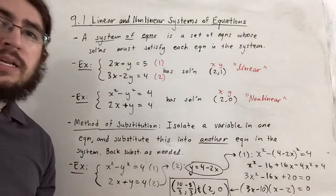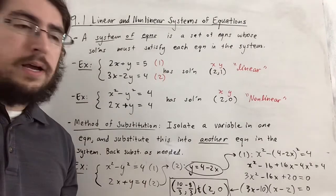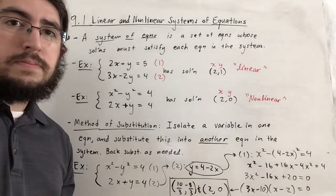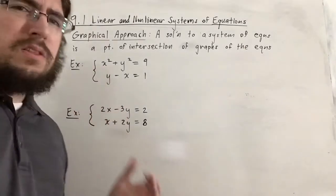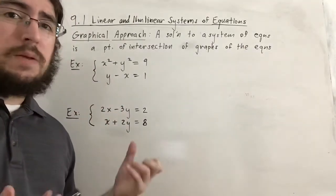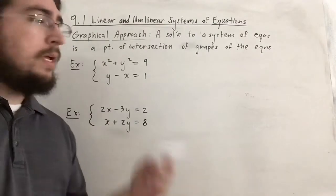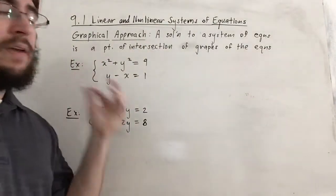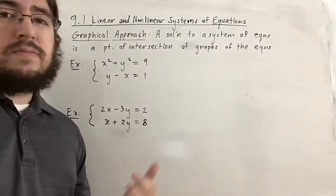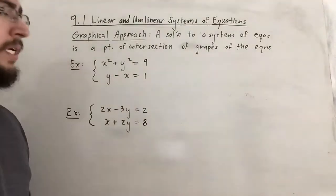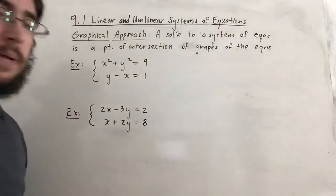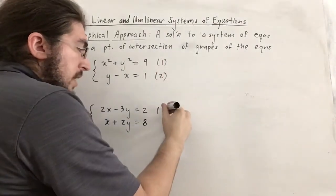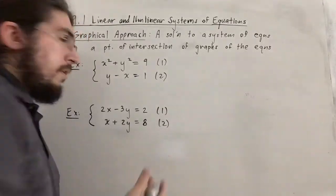Now we'll move on and talk about a graphing approach to systems of equations. The graphical approach, although not used very often, is a pretty interesting concept. The solution to a system of equations is a point of intersection of the graphs of those equations. I'm giving two examples, labeling them as equation 1 and equation 2 in each system.